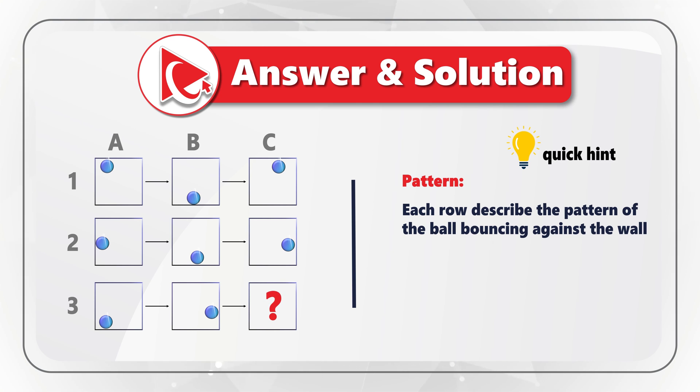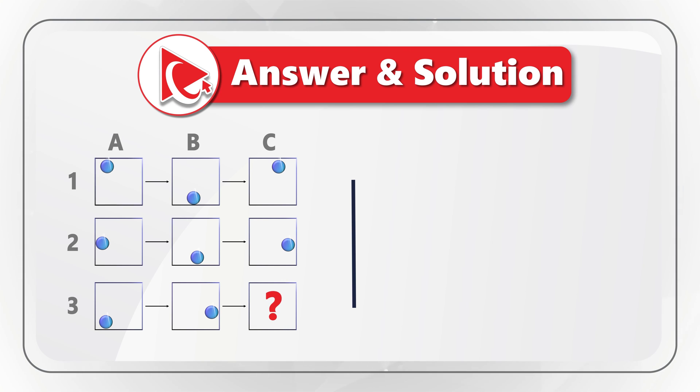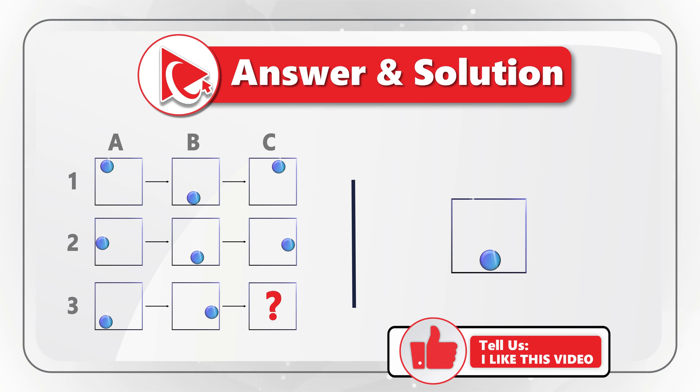As you might have guessed, each row describes the pattern of a ball bouncing against the wall. Let's start by looking at object A1. This is where the ball is in the upper left corner and it moves downwards toward the middle of the bottom section. And this is where exactly we see the ball in object B1.